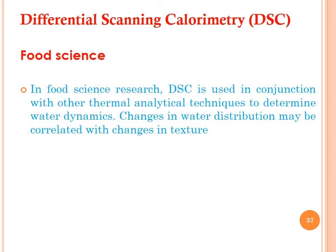In food science, DSC is used in conjunction with other thermal analytical techniques to determine water dynamics. Changes in water distribution may be correlated with changes in texture. Water is important in food items — if water quantity exceeds the required amount in packed food, it creates problems and leads to spoilage. DSC is a convenient technique to determine water dynamics in food samples, making it an important instrument in food science analysis.